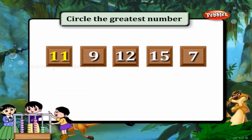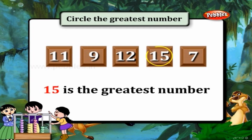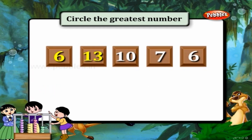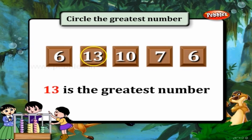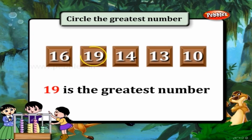11, 9, 12, 15, and 7. Can you tell me which is the greatest number? 15 is the greatest number. Next set: 6, 13, 10, 7, and 6. 13 is the greatest number. Next set: 16, 19, 14, 13, and 10. Which is the greatest number? Yes, 19 is the greatest number.